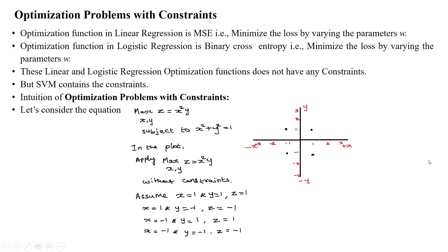Welcome to the session on optimization problems with constraints in SVM. When considering linear regression with the mean squared error loss function, we minimize the loss by changing the parameter w. For logistic regression, which is used for binary classification, the binary cross-entropy log likelihood is used as a loss function, and we also minimize the loss by varying the parameters w.